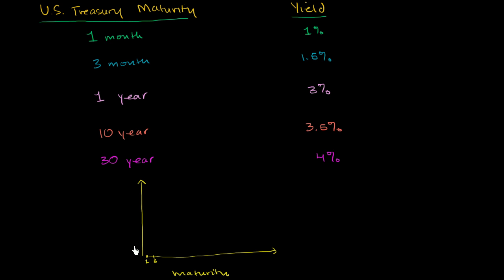We have three months—and this won't be completely to scale. Then we have one year. Actually one month and three months, let's just put one month right at the beginning. So one month, then three months is a little bit further out. One year would be right over here.